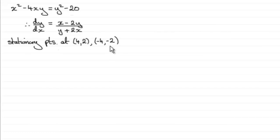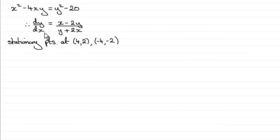The purpose of this tutorial is to determine the nature of those stationary points using the second differential method — d²y/dx². If d²y/dx² is greater than zero when we substitute our x and y values, the point is a local minimum; if it's less than zero, it's a local maximum. The problem is that differentiating equations like this again can be tricky.